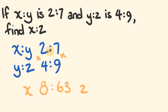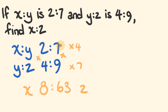So why does this work? In order to compare these two ratios we have to compare using the value of y. Y has a value of 7 here and a value of 4 here, so we have to make these two equivalent. We multiply this entire ratio by 4 and we multiply this entire ratio by 7, which makes the two values for y equivalent. 2 times 4 gives us 8, and 7 times 9 gives us 63. We have our answer.